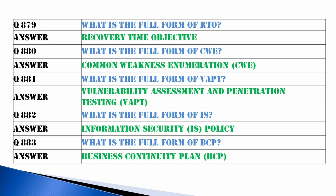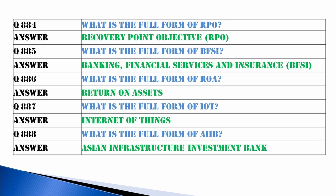What is CWE? Common Weakness Enumeration. What is VAPT? Vulnerability Assessment and Penetration Testing. What is IS Policy? Information Security Policy. What is BCP? Business Continuity Plan. What is RPO? Recovery Point Objective. What is meant by BFSI? Banking, Finance, Service and Insurance.